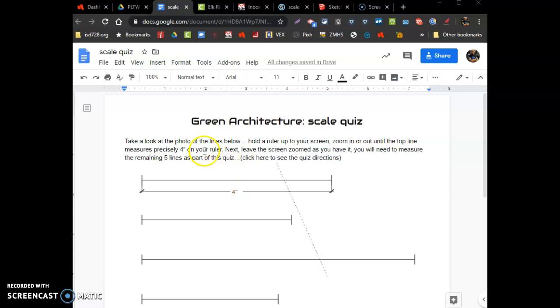Do the lines first. It says look at the photo below, hold the ruler up to your screen, zoom in or out until the top line, this one here, measures precisely four inches. So use your ruler, put it against your screen, zoom in, zoom out until it's four inches. I have it built so it should be four inches already, but you never know depending on the size of your screen.